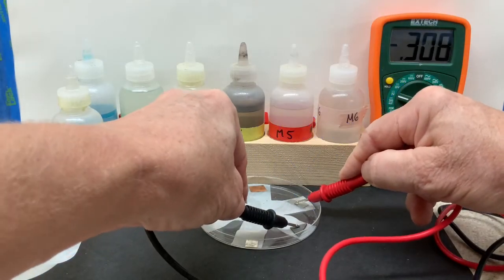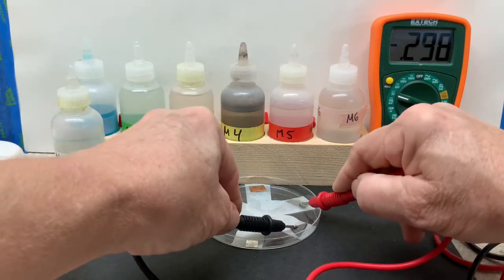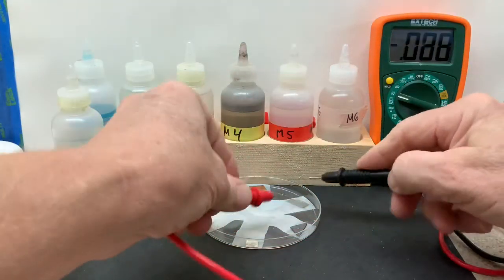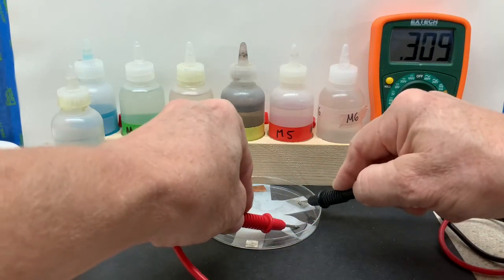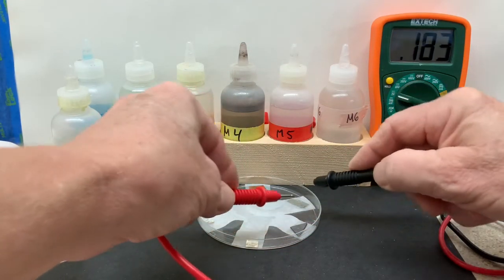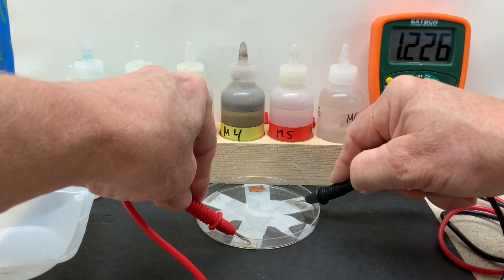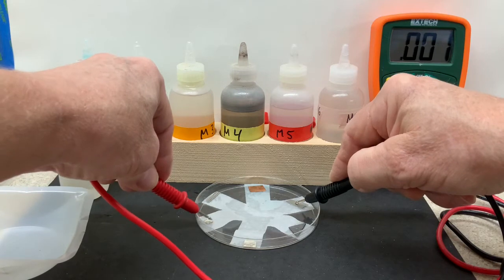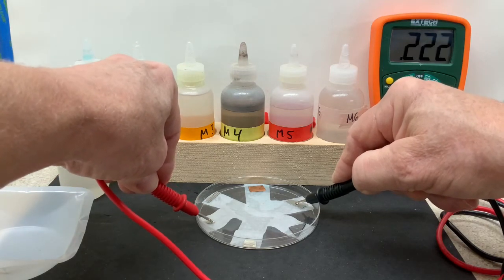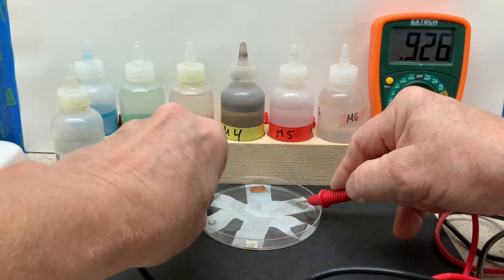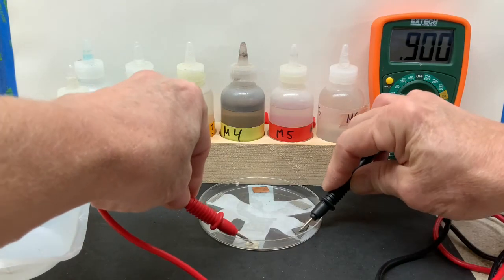This is metal two with metal three. Again, this time we want to record the positive value, paying attention to which metal is touching the black lead. Metal two to metal four, now metal two to metal five, and now metal two to metal six.